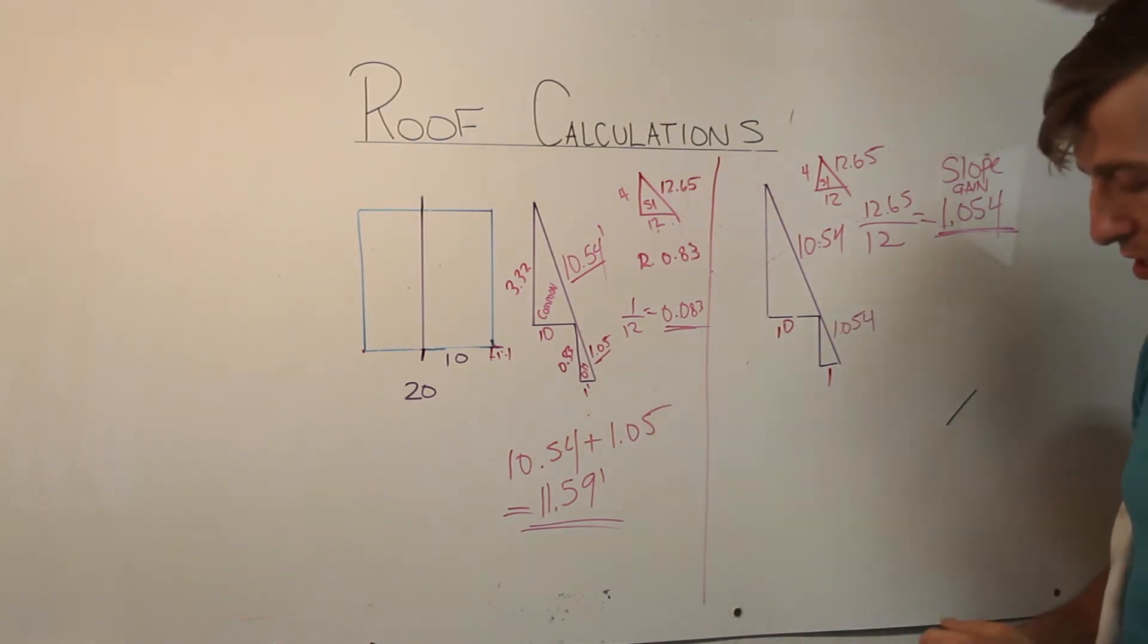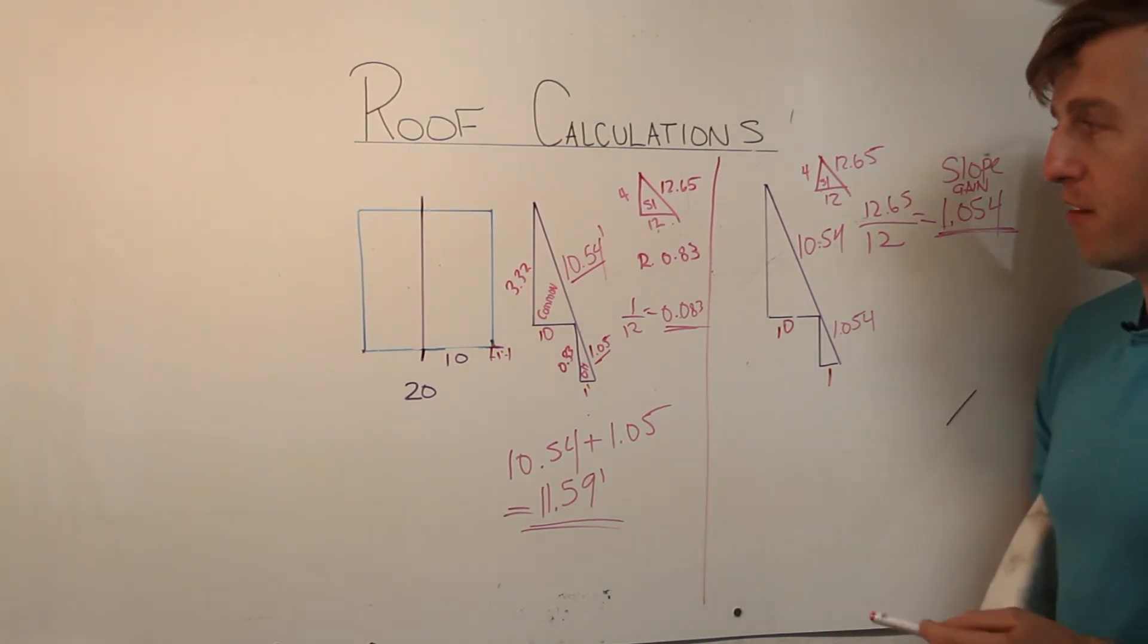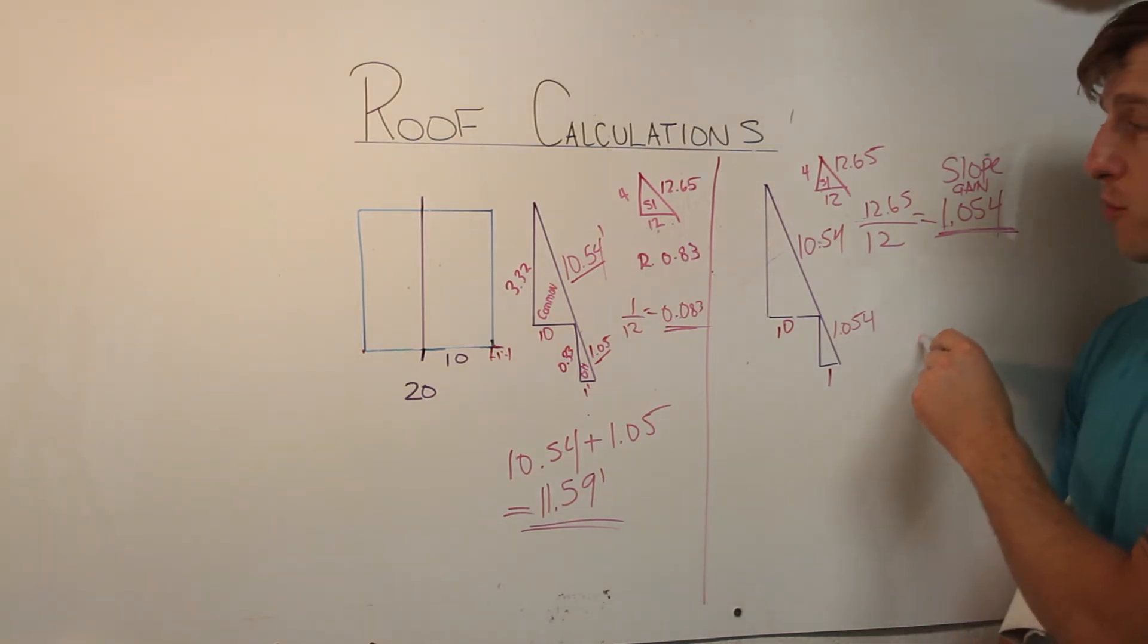So you can see using slope gain is a lot quicker and it's a lot simpler. There's a lot less room for error in calculation especially when you're doing more complex roofs and you have a lot more calculations going on. Using slope gain can actually speed up your calculations and reduce your error potential greatly. So I really recommend doing slope gain whenever you can and just make sure you carry maybe an extra decimal point or two and that will increase your accuracy.